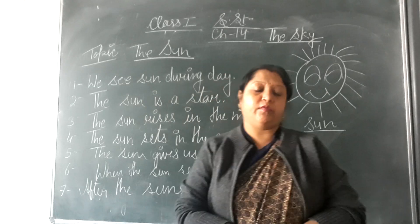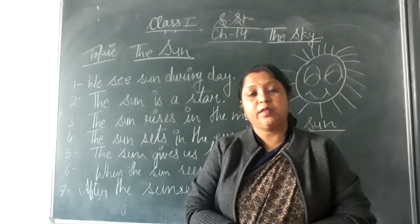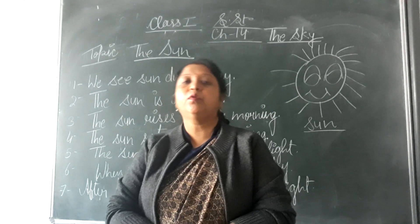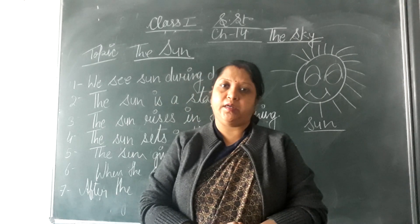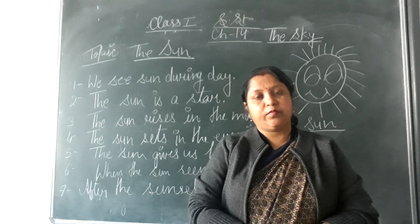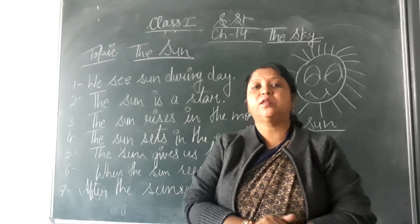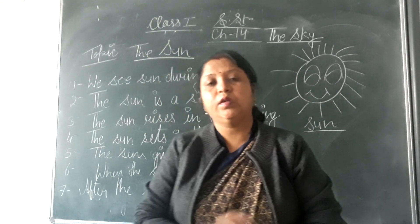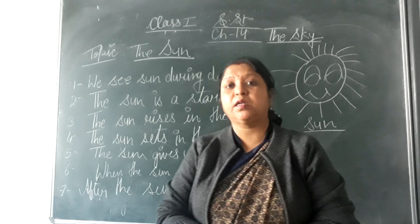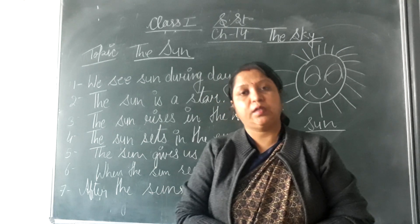Where is the sky? The sky is above us. What is the color of the sky? It looks blue on a clear day. We can see the sun in the sky during the daytime. At night we can see stars and moon in the sky. We also see birds, aeroplanes, helicopters, and balloons in the sky.